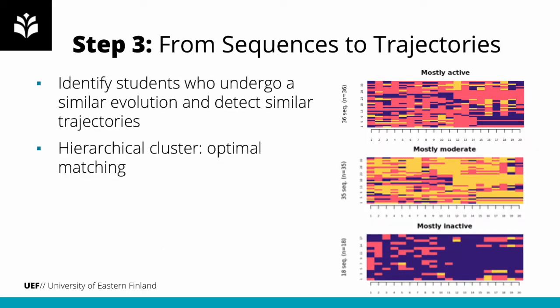In the last step, we use hierarchical clustering to cluster similar sequences into trajectories. In this case, mostly active, mostly moderate, and mostly inactive. The three trajectories can now be studied separately or compared, for example, in terms of performance.